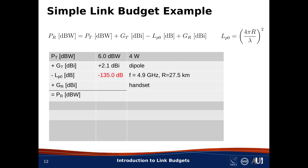Path loss is computed using the usual equation shown in the upper right of this slide. We get L_p0 equals 3.19 times 10 to the 13th in linear units, which is +135.0 dB. Now, remember, we're dividing by path loss in the Friis equation, so we tack on a minus sign for this entry.